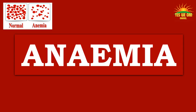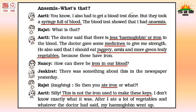Now we shall learn about a new disease called anemia. When Rajat told about his malaria, Aarti says she also had to get a blood test done, but they took a syringe full of blood. The blood test showed she had anemia. The doctor said there was less hemoglobin or iron in the blood. The doctor gave medicines for strength and said she should eat jaggery, amla and more green leafy vegetables because they have iron. After eating lots of vegetables and iron-rich food, her hemoglobin went up.